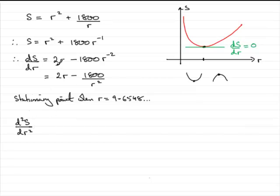So we can take this equation now and differentiate it in the normal way. So if we differentiate 2r with respect to r we just get 2.